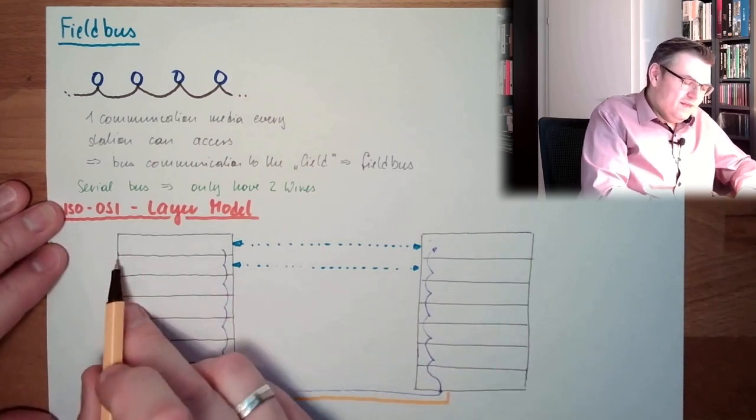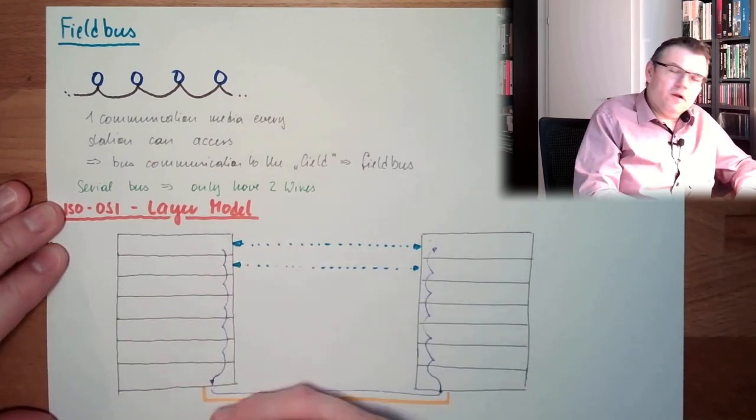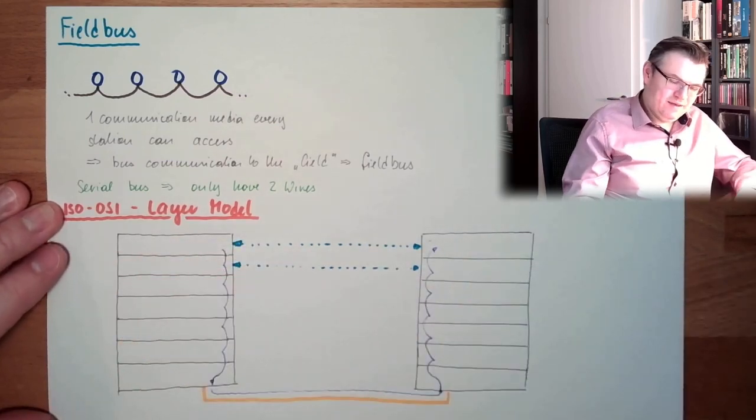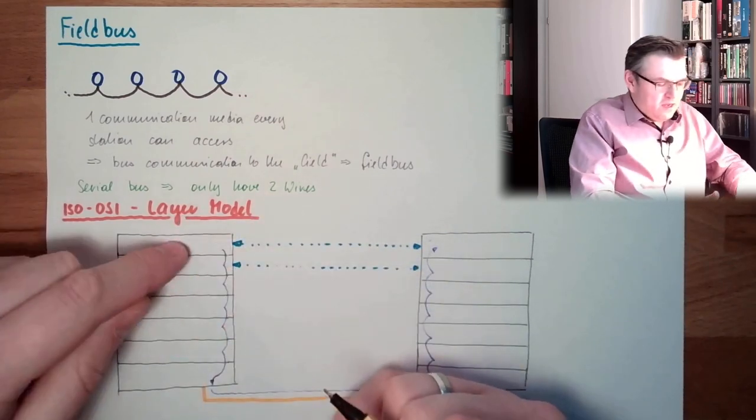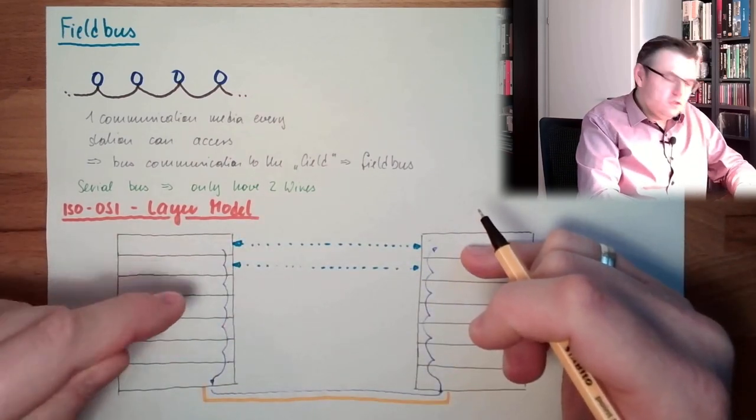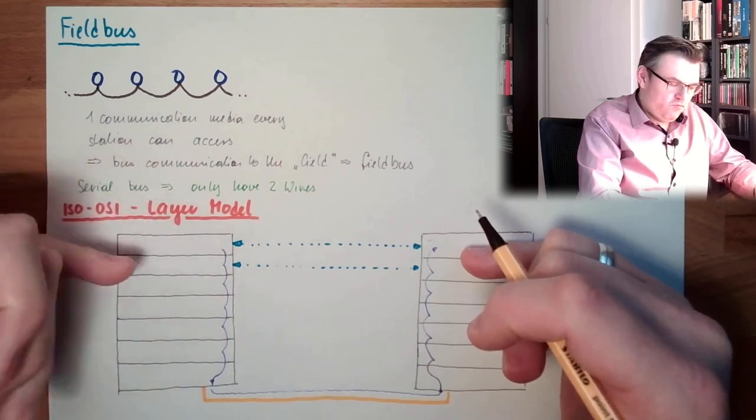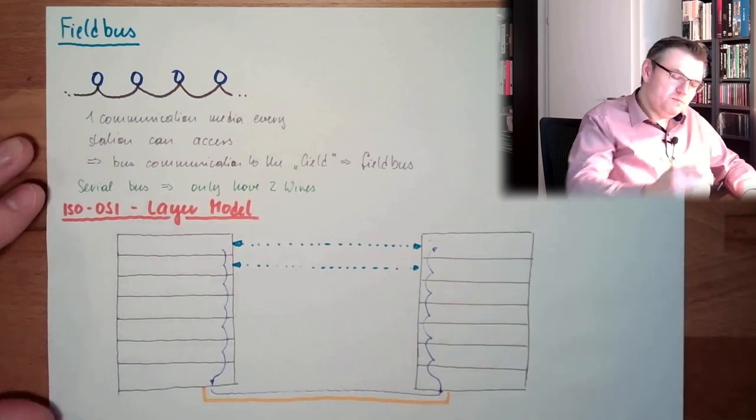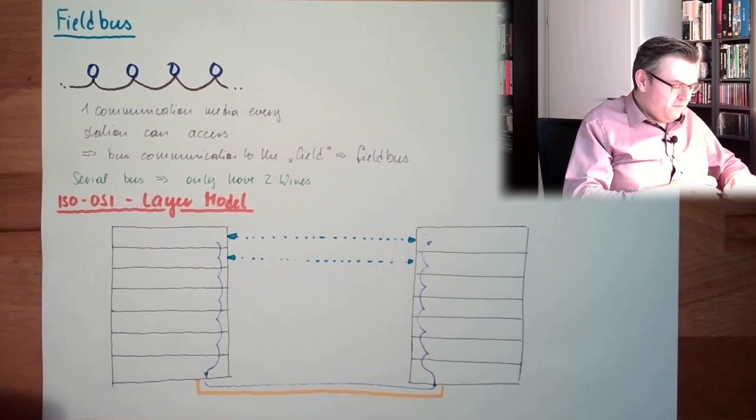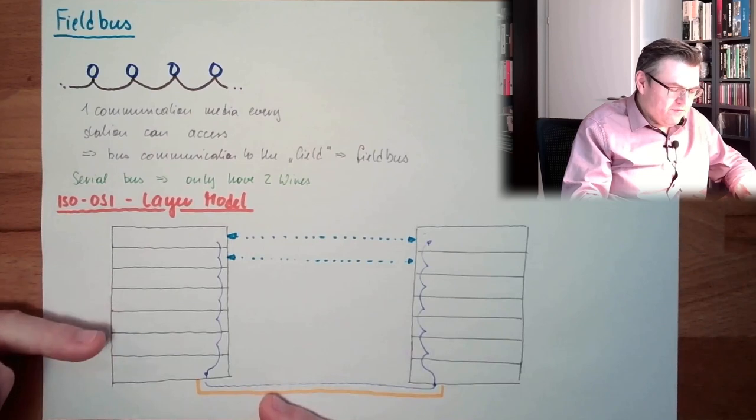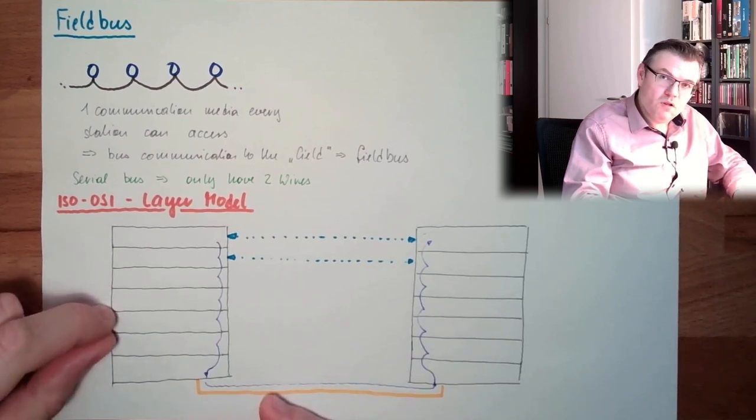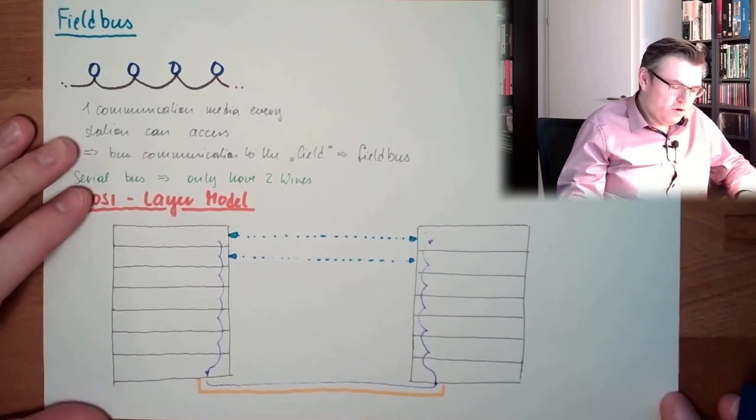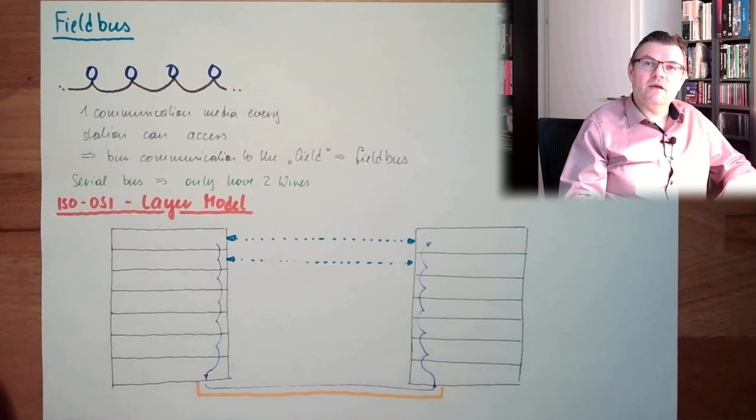But from a logical point of view, this layer does not really care what is underneath. There is an interface implemented. I give it to this messenger - this is just a messenger for this layer. And every layer takes care of one specific task. So if these interfaces are defined, I can rip out one layer and install another layer from another company. And this is still working.